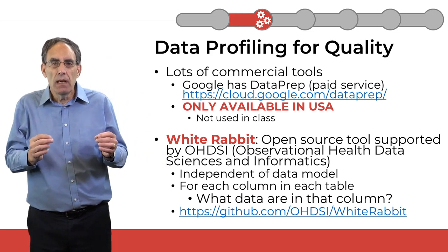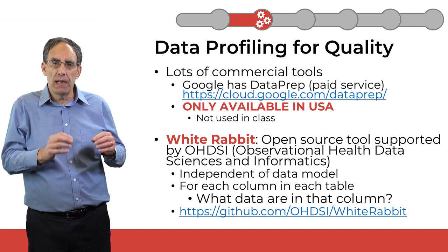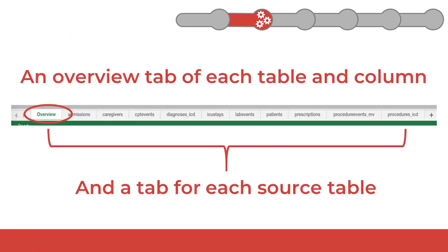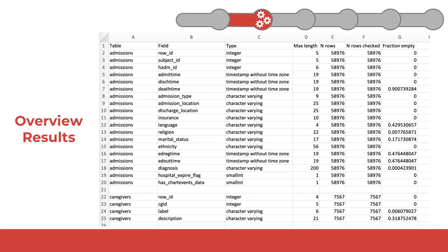We describe its use in detail in a previous module. White Rabbit provides information on every column in a database, which is what we need for data profiling. I provide a copy of White Rabbit's output on a subset of tables from the full MIMIC database in the course materials. White Rabbit's output is an Excel spreadsheet. The first workbook is an overview of all the tables and columns analyzed by White Rabbit. Each subsequent tab is devoted to more detail about each specific table. This view of the overview workbook shows statistics on data types, row counts, and the fraction of missing values for every column in every table.